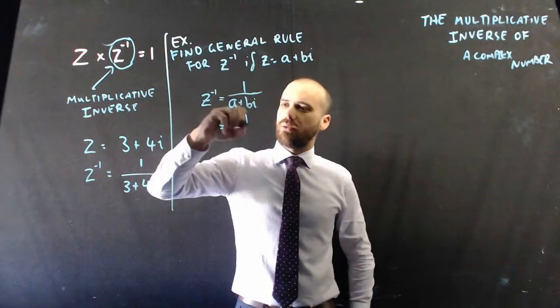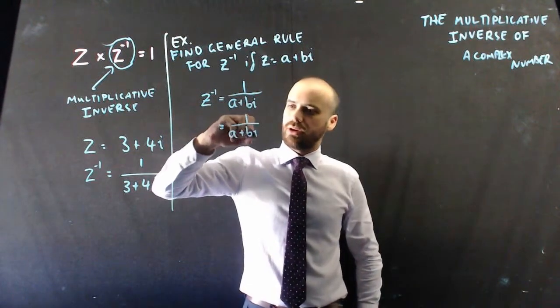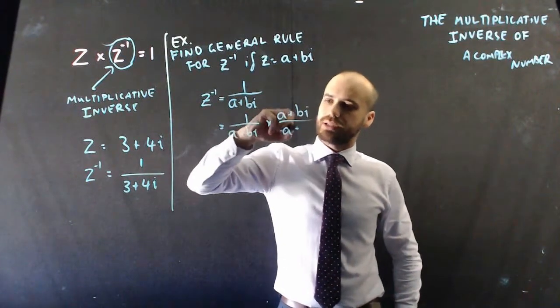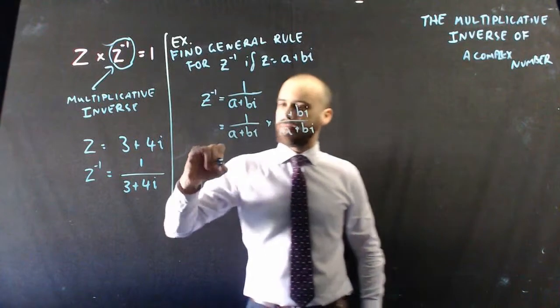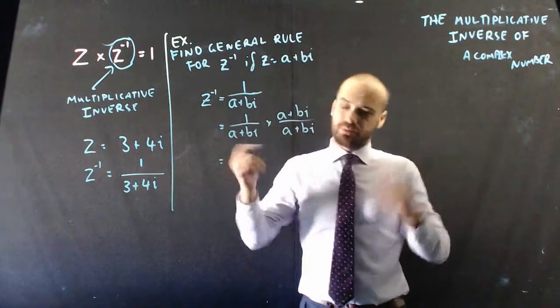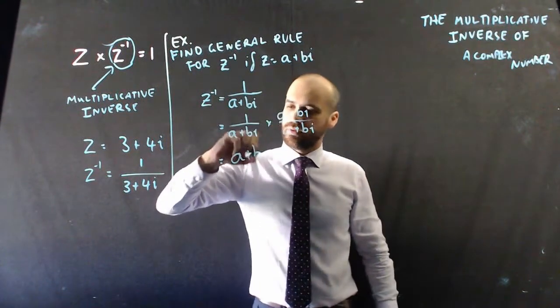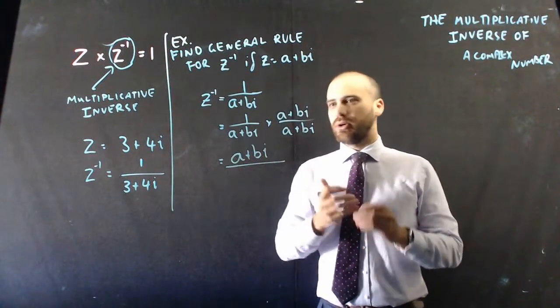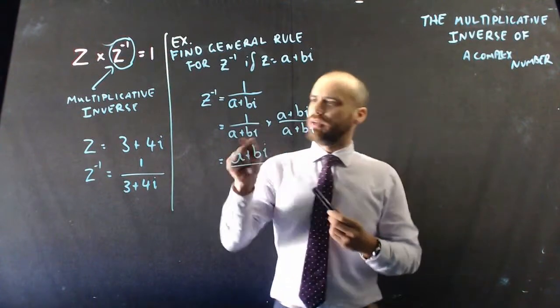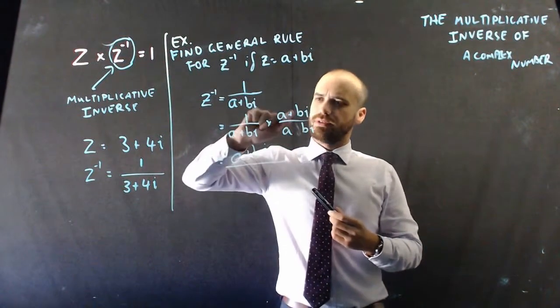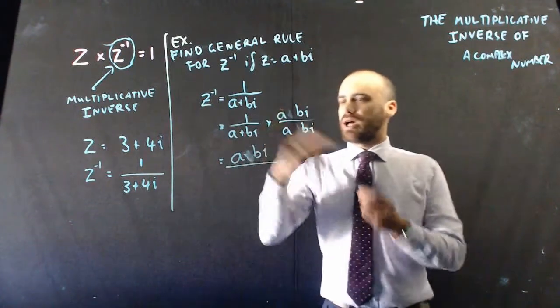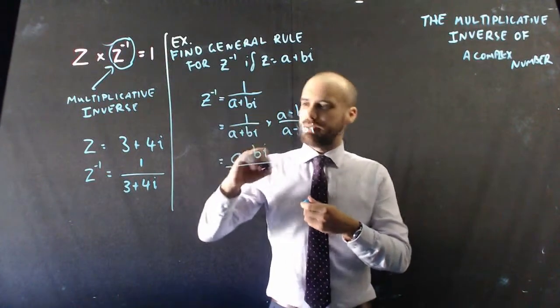And then that's going to be 1 over a plus bi times a plus bi over a plus bi. And 1 times a plus bi is a plus bi. And then if I do... Uh-oh. Oh, whoa, whoa, whoa. Slow down. Conjugates. Conjugates. 1 times a minus bi. Minus bi. Okay.